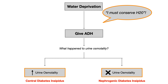However, if you give them ADH and there is no change in their urine osmolality, that's nephrogenic DI — because even though you gave them ADH, it could not act on the proper receptor at the kidney. That's the definition of nephrogenic diabetes insipidus. So the water deprivation test is very revealing on USMLE or COMLEX: ask yourself, if I give them ADH and urine osmolality doesn't change, the kidney is the problem — and that's nephrogenic DI.